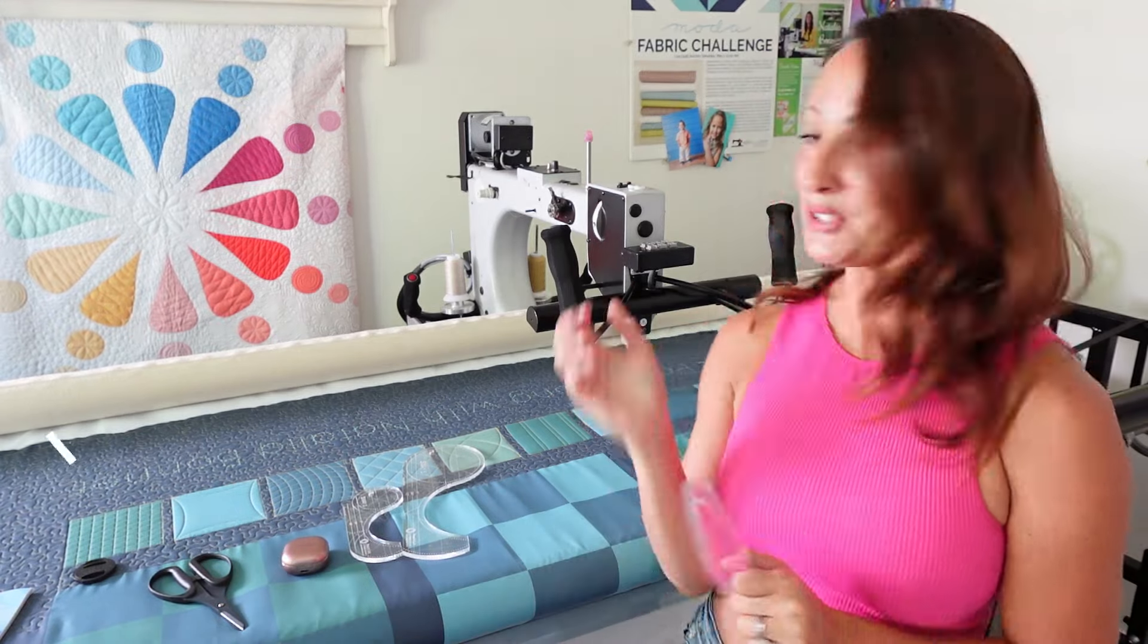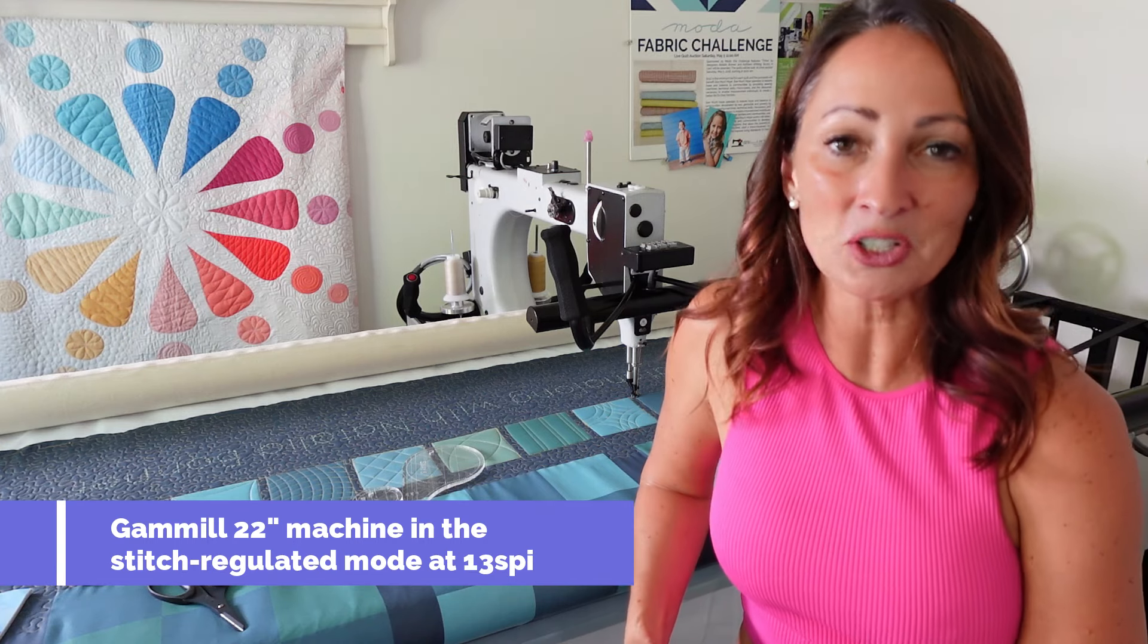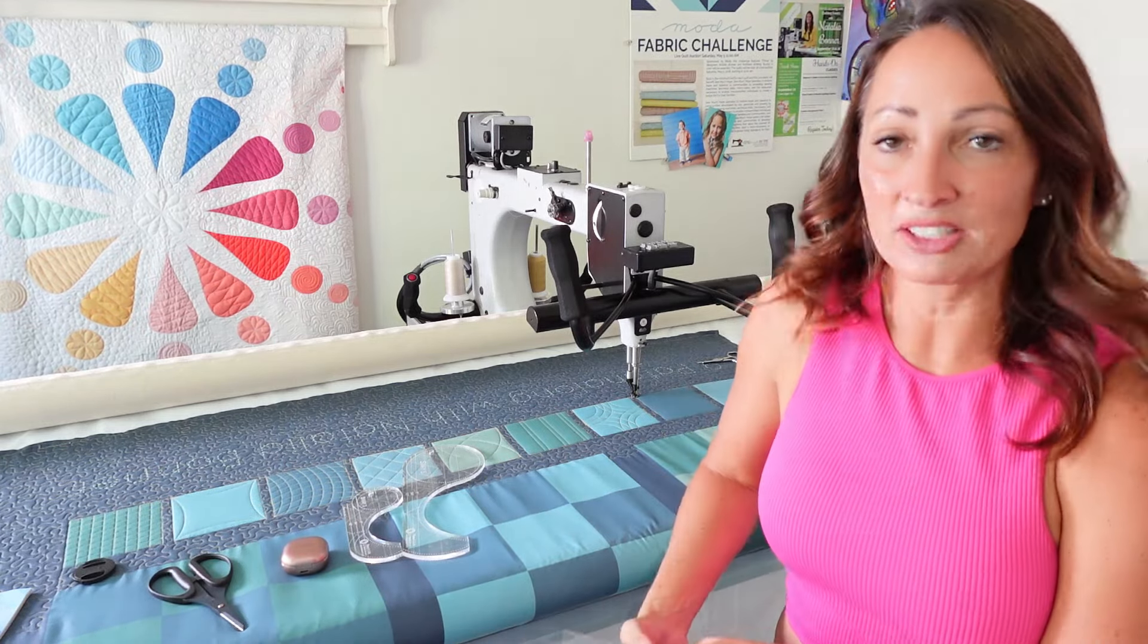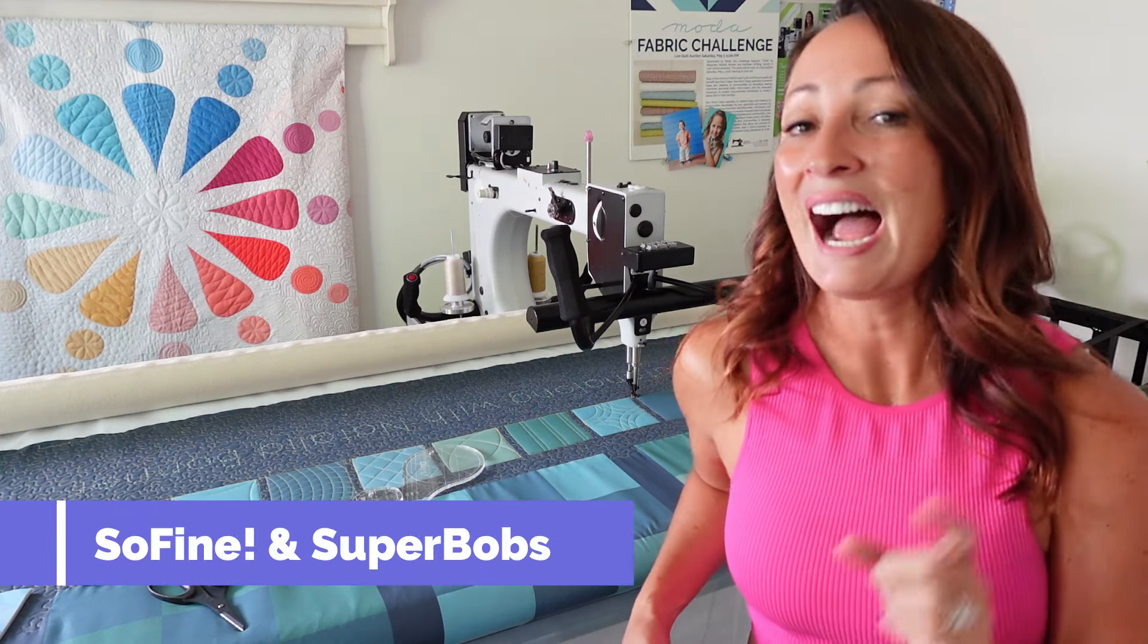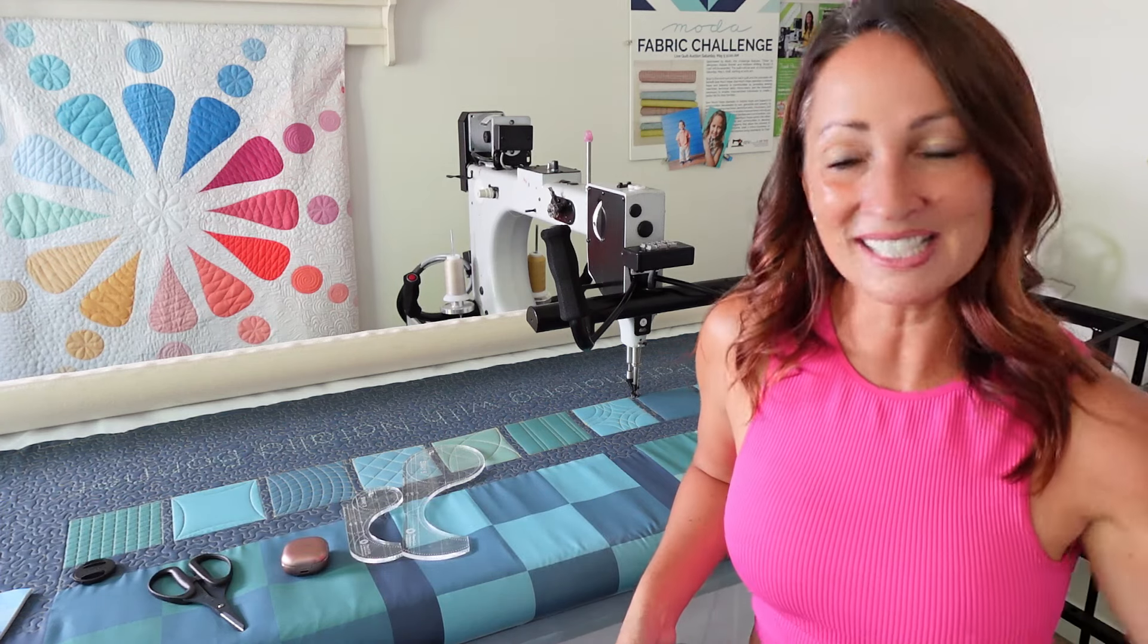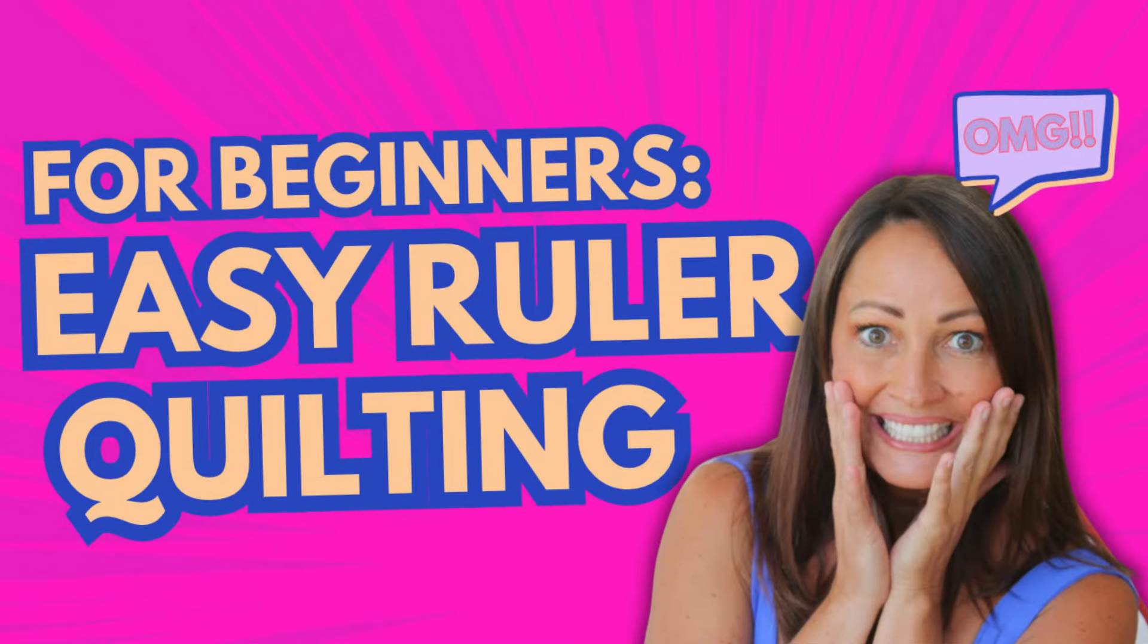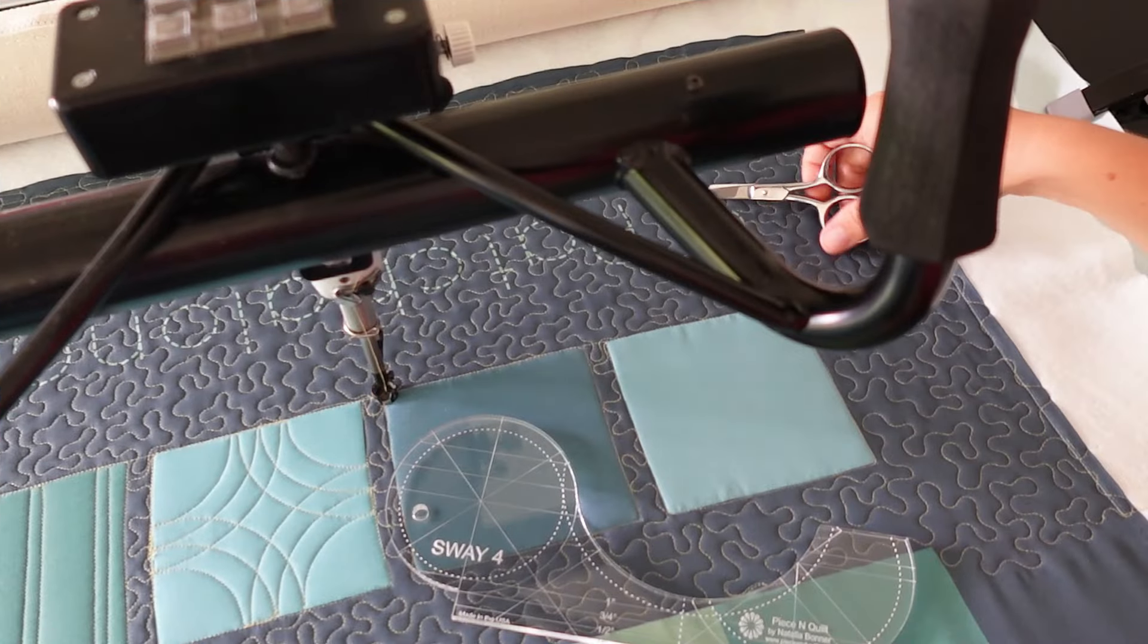I will be stitching here today on my Gammel 22 inch machine. I am stitching in the stitch regulated mode and I do have my stitch length set at 13 stitches per inch. The thread I'm using on the top is so fine and then I'm using the pre-wound super bobs in my bobbin. I am using one layer of the quilter's dream poly deluxe batting. Alright friends, let's hop over to my machine and let's get quilting.